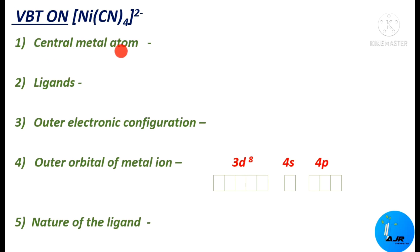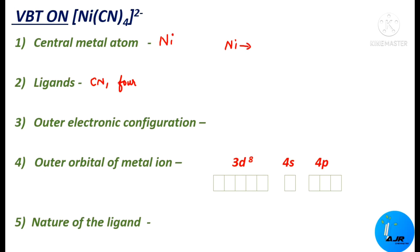The central metal atom here is nickel (Ni). There are 4 cyanide (CN⁻) ligands present. In this complex, the oxidation state of Ni is +2. Therefore, the complex consists of the central Ni²⁺ ion surrounded by 4 cyanide ligands.